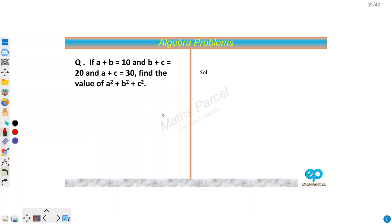Hi everyone. In this video we will solve an easy level algebra problem. The question says: if a plus b equals 10, and b plus c equals 20, and a plus c equals 30, then what is the value of a squared plus b squared plus c squared?